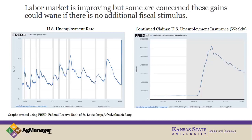How do we send aid in a way that builds up businesses so they can continue to function and offer competitive wages? You can see where continued claims may be starting to level off. If we have misguided fiscal stimulus, could it rise again? Possibly. Hopefully if fiscal aid comes into the marketplace, it's there to support businesses so they can continue to operate. The paycheck protection program had some faults, but it certainly had that kind of aim.